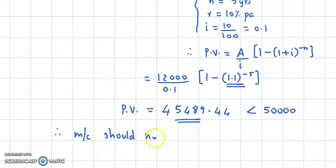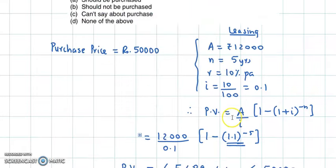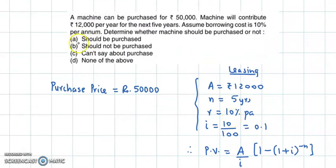The machine should not be purchased. If the leasing scheme present value is more than 50,000, then we will purchase the machine. But the leasing scheme has a present value of 45,000, and the machine purchase price is 50,000. So 45,489 is less than 50,000. That is why the machine should not be purchased. This is the right answer: option B, should not be purchased.